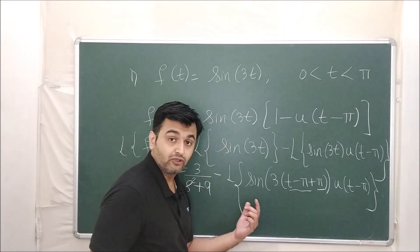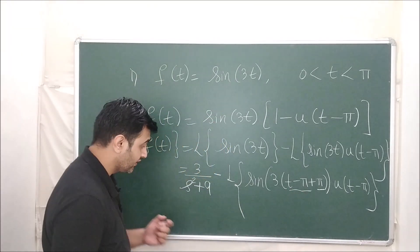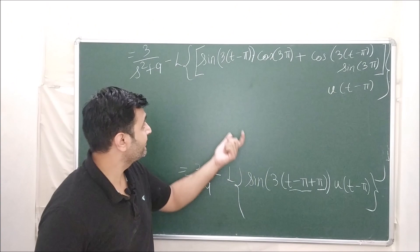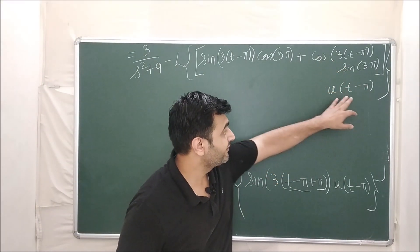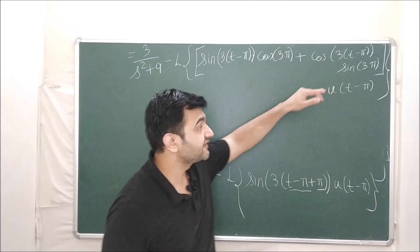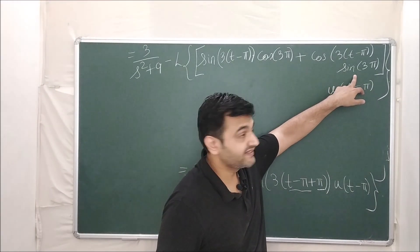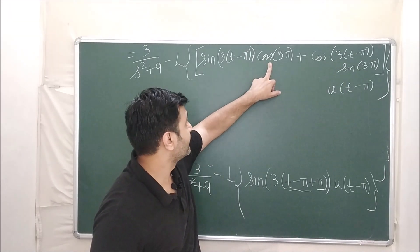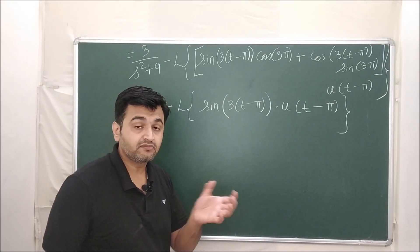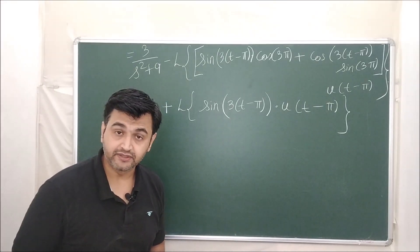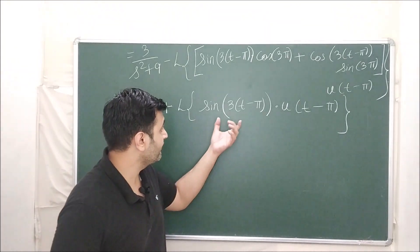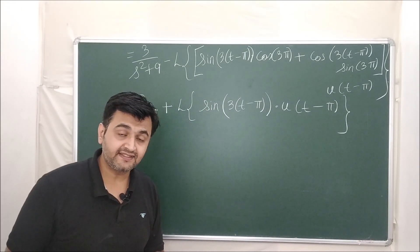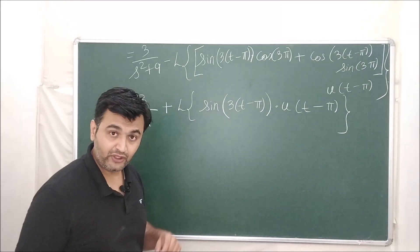So add and subtract π inside: sin(3·(t − π) + 3π). Expanding using the sine addition formula sin(A + B) = sin A cos B + cos A sin B, multiplied by u(t − π). Now sin(3π) = 0 so that term vanishes. What is cos(3π)? It is −1. So you have everything in terms of (t − π) and you can apply the second shifting theorem: whenever you have f(t − a) · u(t − a), the Laplace is e raised to minus as times L{f(t)}.